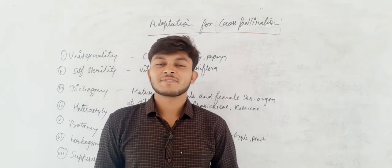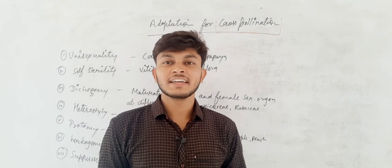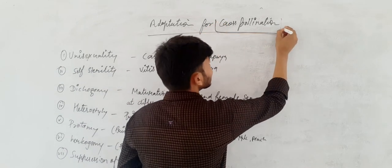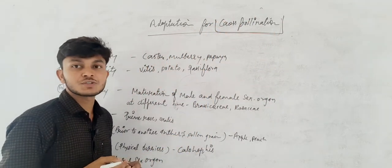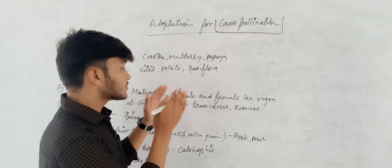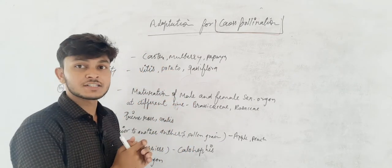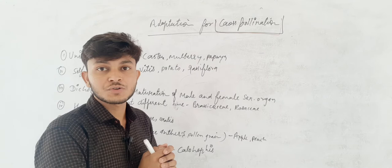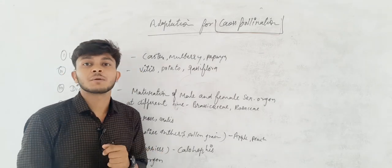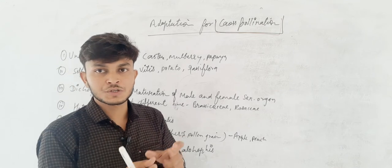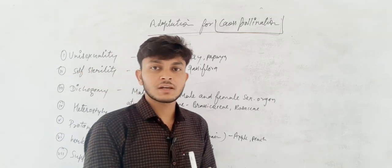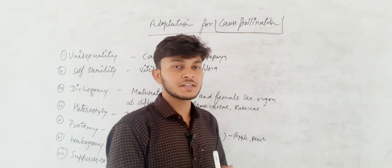Good morning class. Today we will talk about adaptation and cross-pollination. Cross-pollination is required for any adaptation. We have talked about pollination — self-pollination and cross-pollination. Pollination is basically of two kinds: number one is self, and number two is cross. So now we are talking about adaptations.